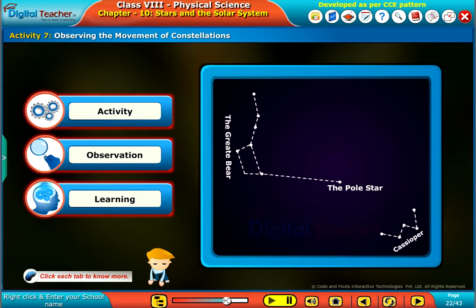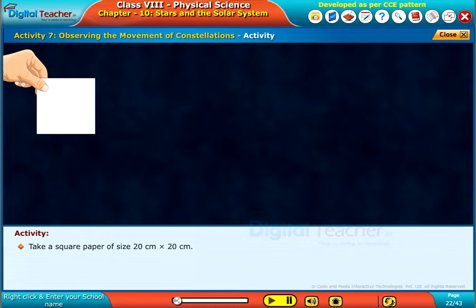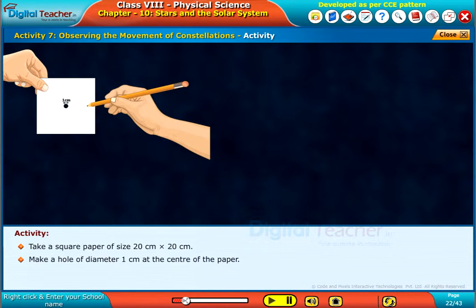Click each tab to know more. Take a square paper of size 20 centimeters by 20 centimeters. Make a hole of diameter 1 centimeter at the center of the paper.